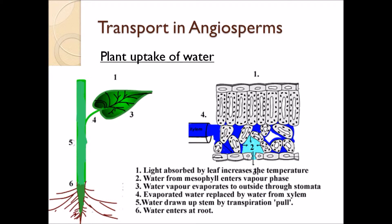This continues all the way down to the roots of the tree, where water is being pulled in at the bottom — all of this mostly thanks to cohesion, starting because of the evaporation in the leaf. Now, it is that simple, but let's do it in more detail starting at the bottom this time.